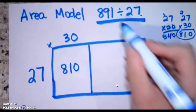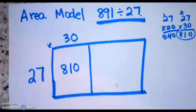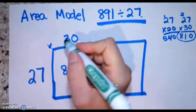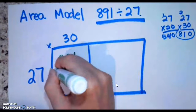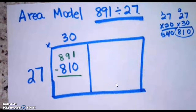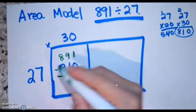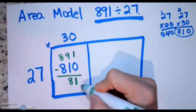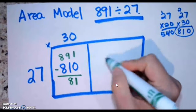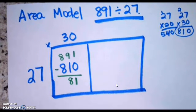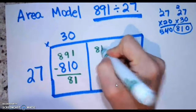That's getting close to my 891, but I'm not there yet. I like to write in my boxes: 891 minus 810. Let's figure out how much I have left — how much I need to keep dividing by. I have 81 left. So I'm going to take this 81 and it's going to be what I need to fill in the next box. Now I'm looking at 27.